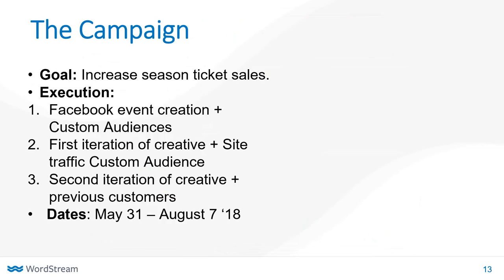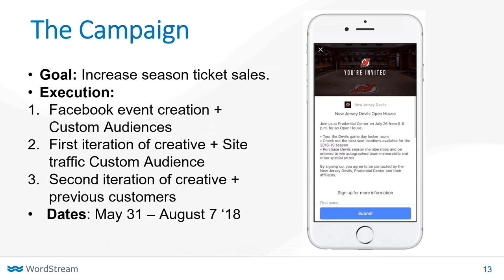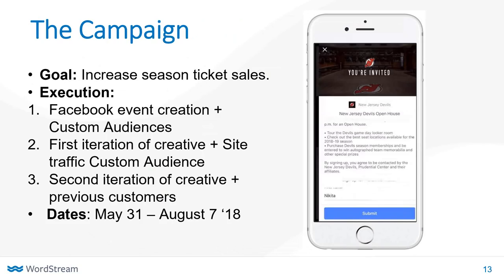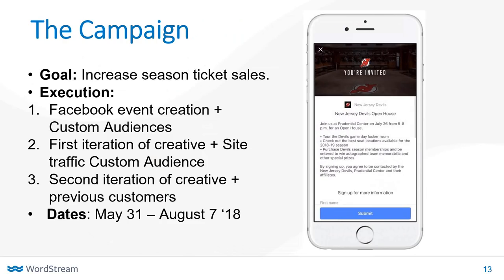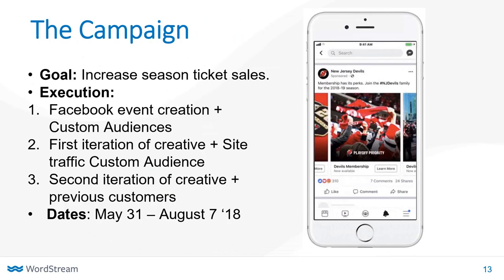So that's what the Devils did. The goal was to increase season ticket sales, and they accomplished that by executing in three stages. First, they created a Facebook event for an open house where people could learn more about buying season tickets, and they used a custom audience to show that event to previous season ticket subscribers. Next, they hosted another event for prospective season ticket holders and used a lead ad to get form submissions from people looking for more information. They showed that ad to people who had looked at the NHL schedule on their website, and to people who had purchased multiple game tickets.